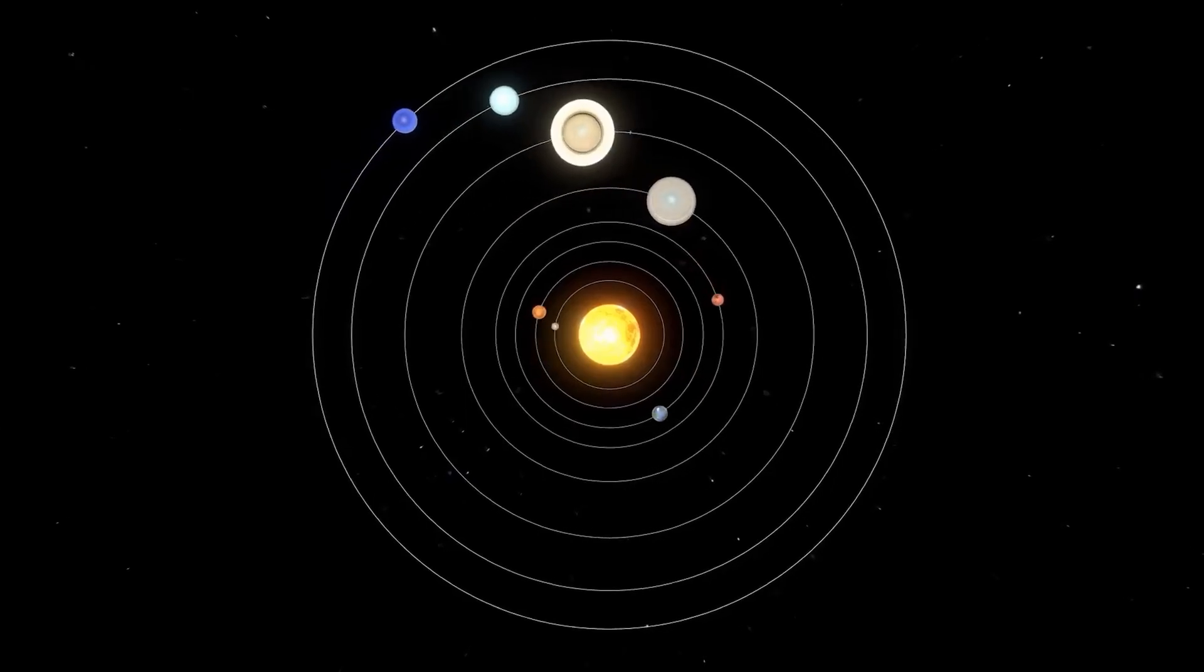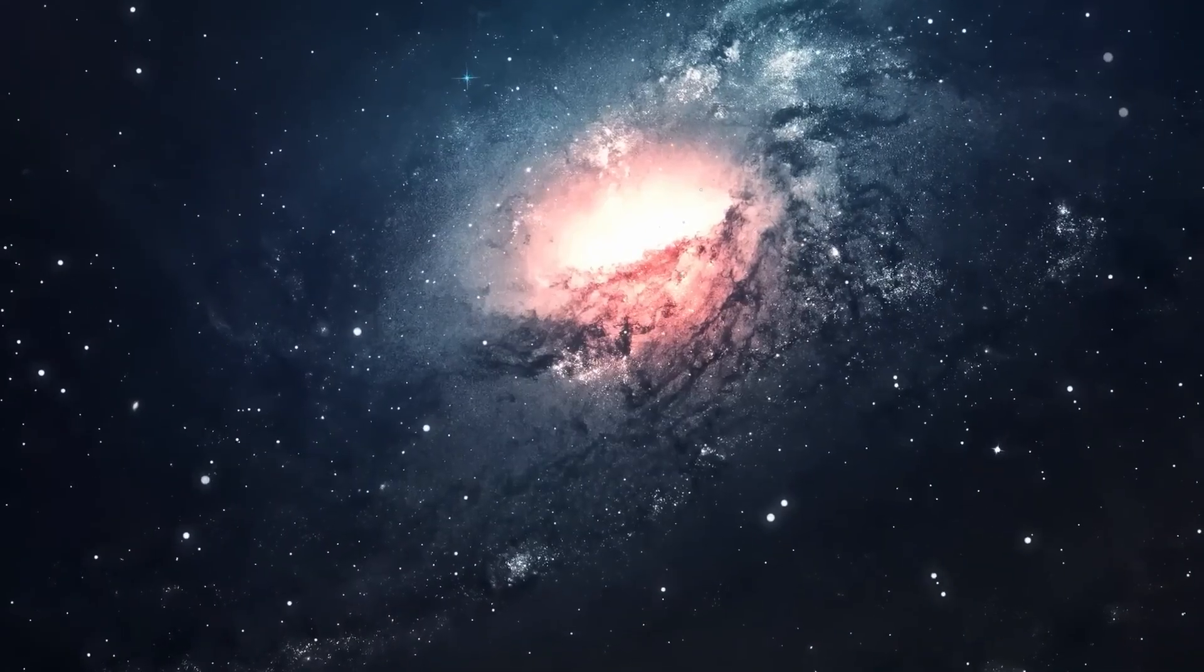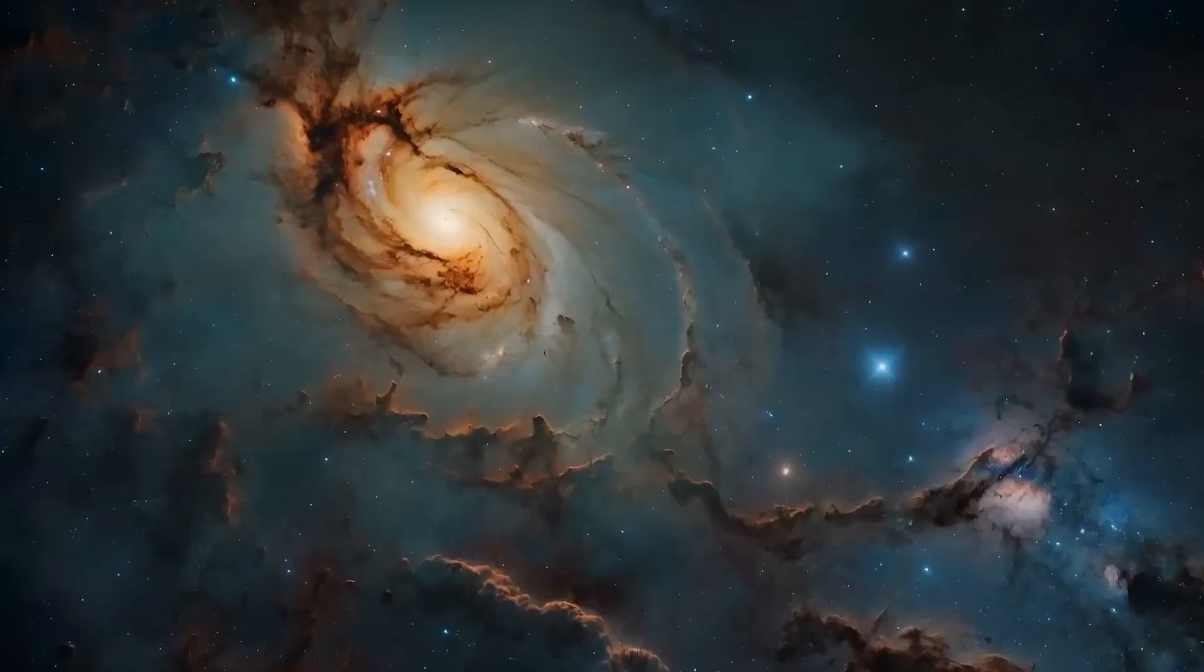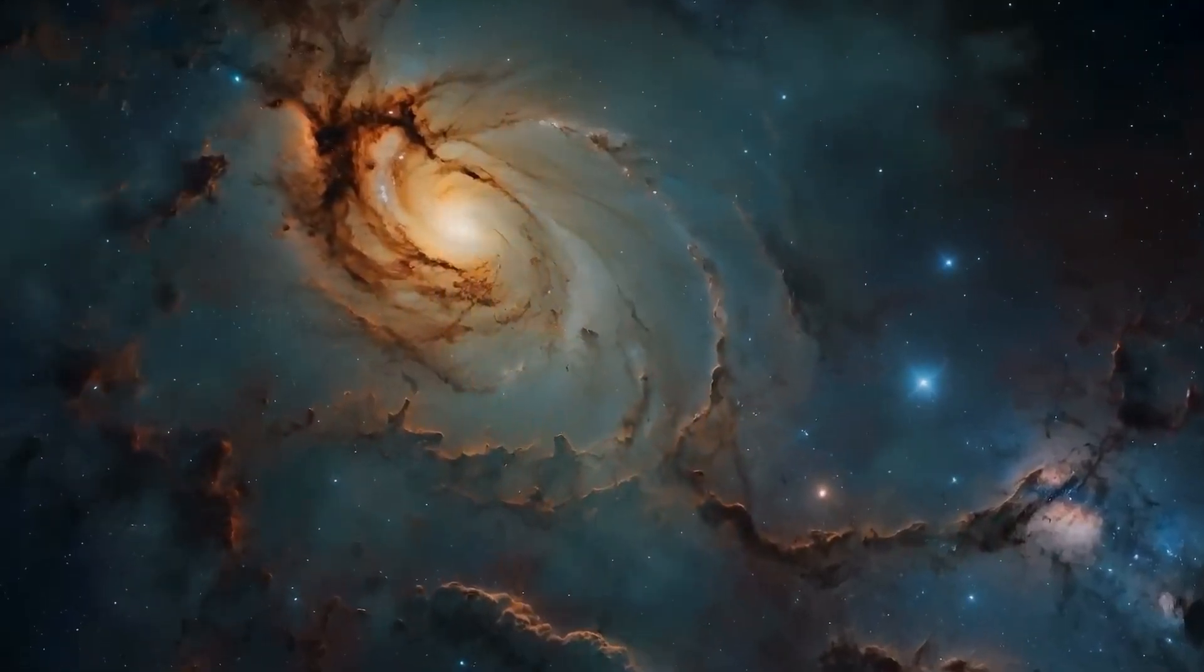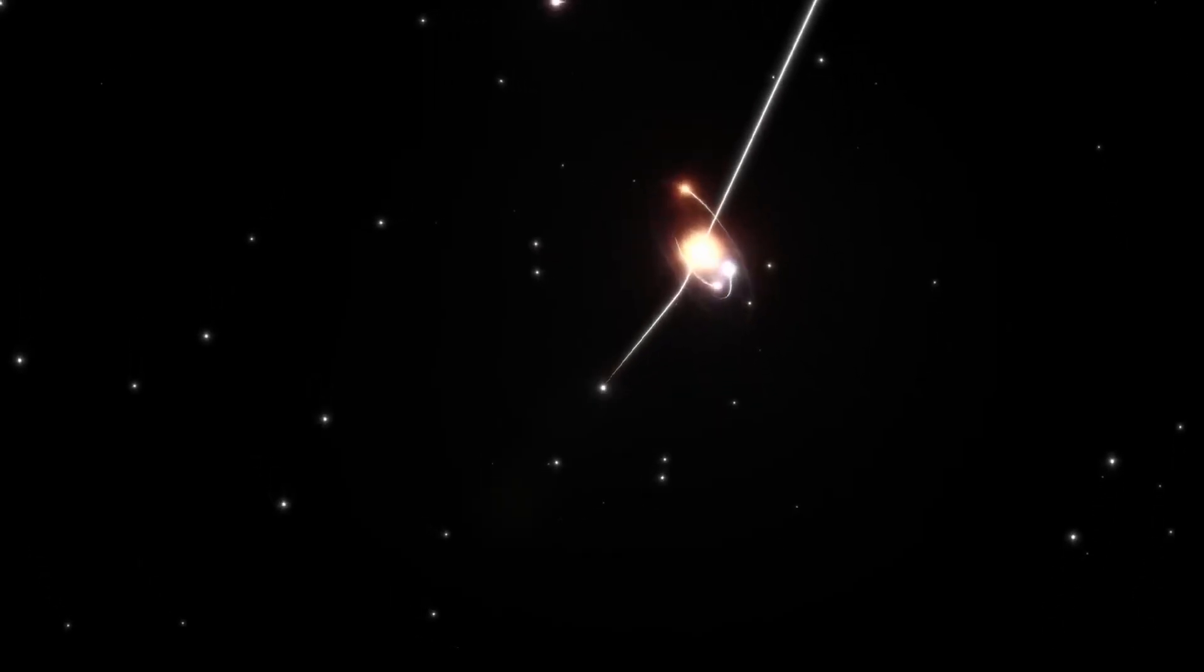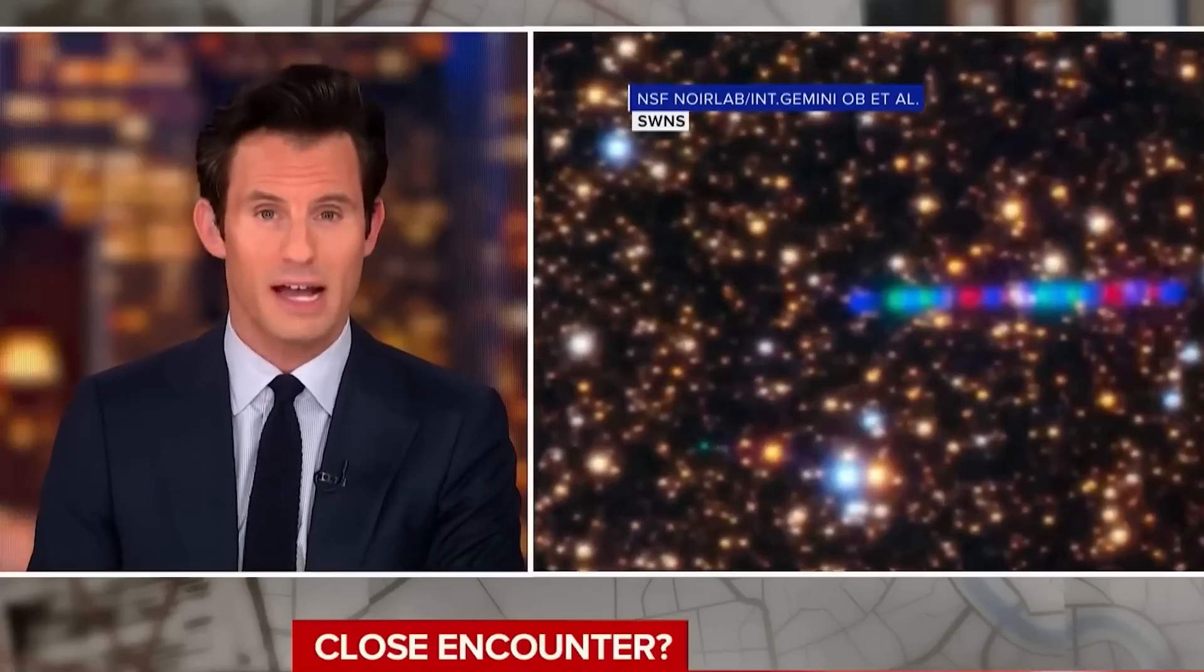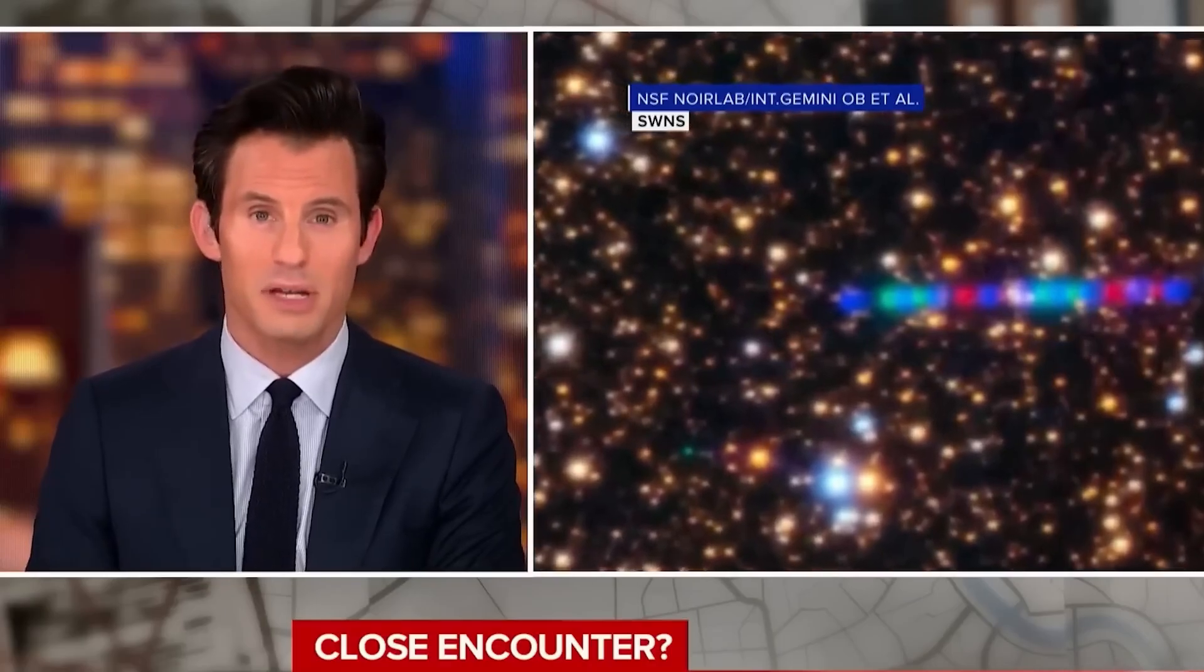3i Atlas didn't just cross that threshold. Its eccentricity placed it firmly beyond one, signaling that it belongs to a tiny class of interstellar visitors. This wasn't a neighbor from the Oort cloud or the Kuiper belt. It had started somewhere far away, crossed empty interstellar space, and was simply cutting through before being lost again.